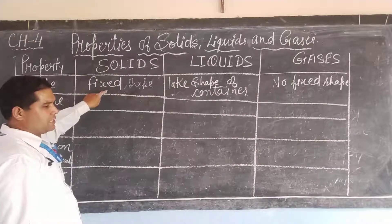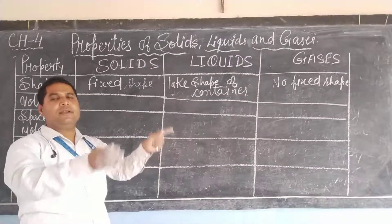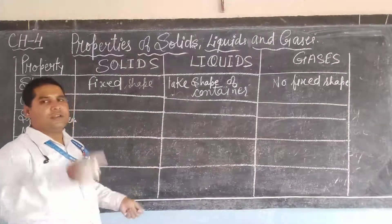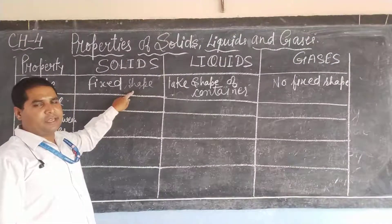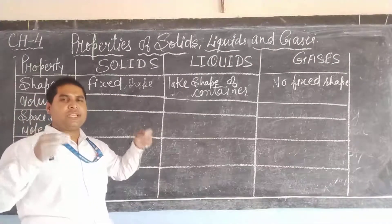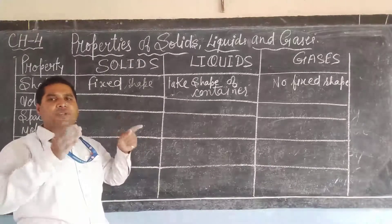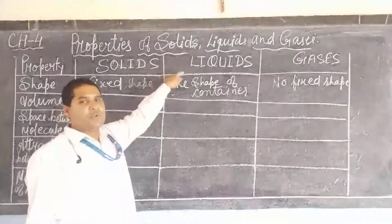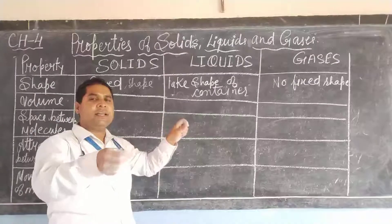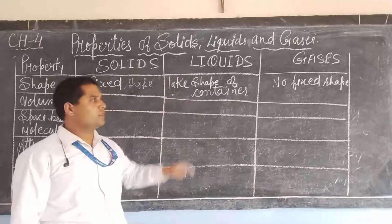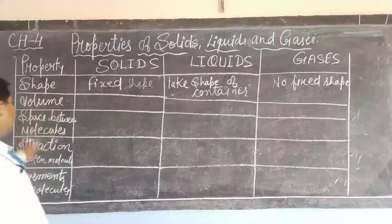So for the shape property: solids are fixed in shape — like brick, stone, table, bench, chair, chalk — all have a fixed shape. The reason is that in solid, atoms are closely packed, and due to that, solid has a fixed shape. Whereas liquid has no fixed shape — it takes the shape of the container in which it is kept. Whereas gases also have no fixed shape.